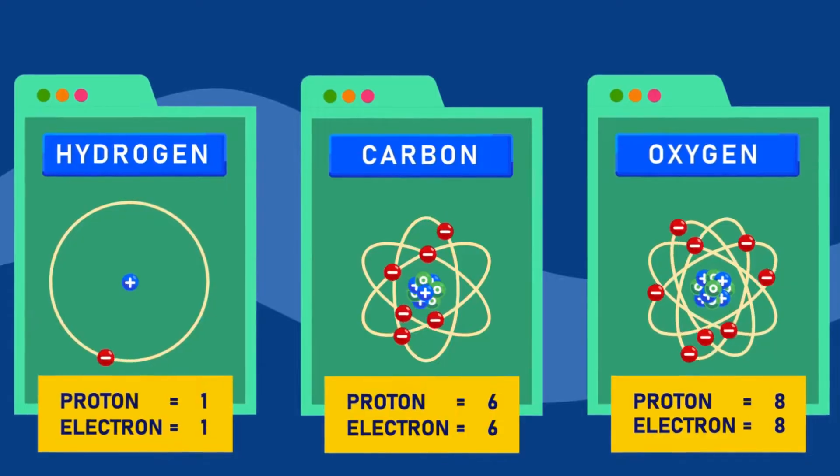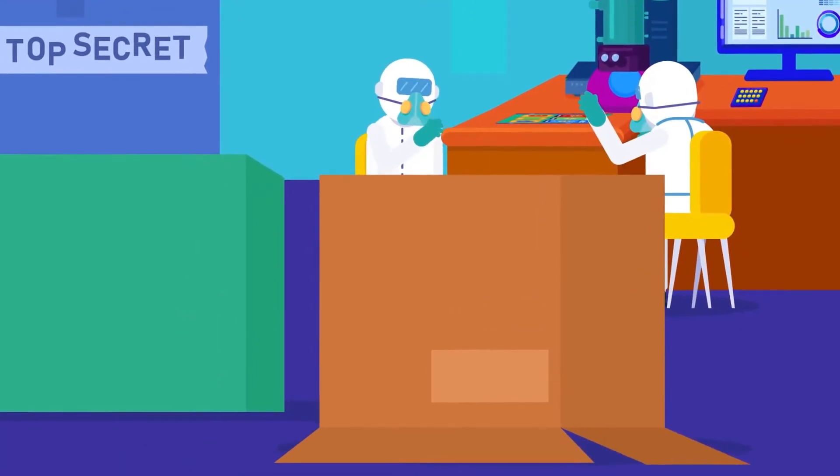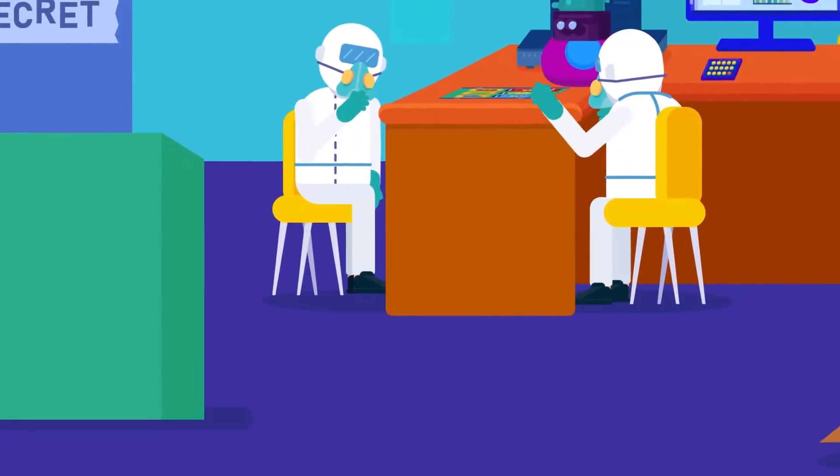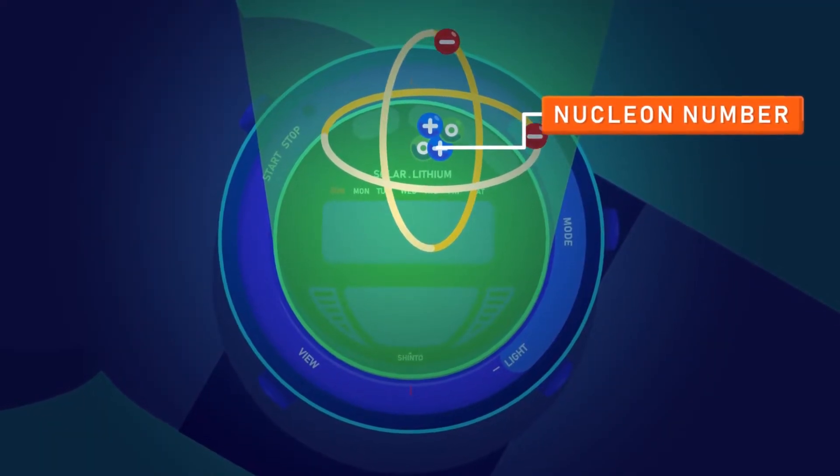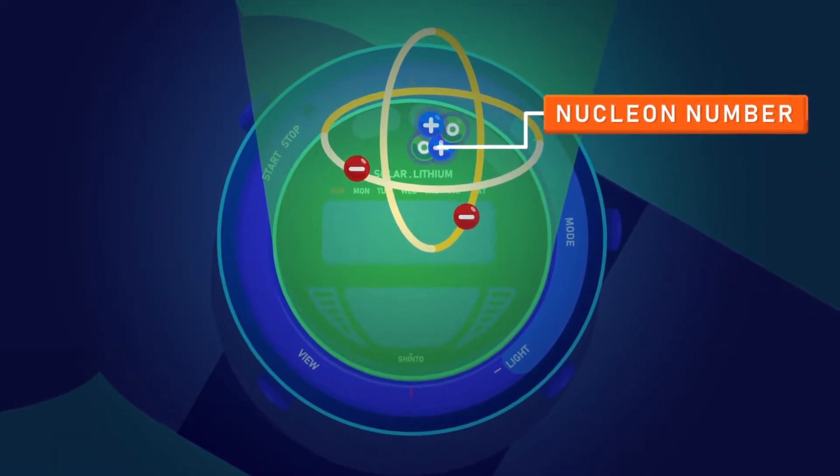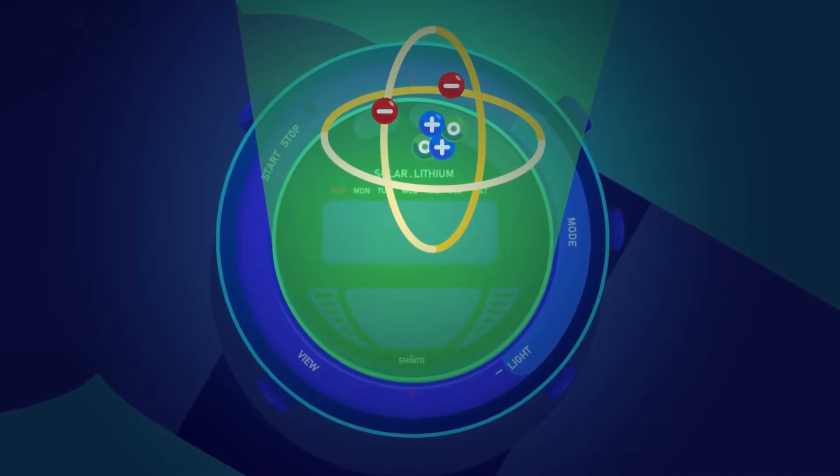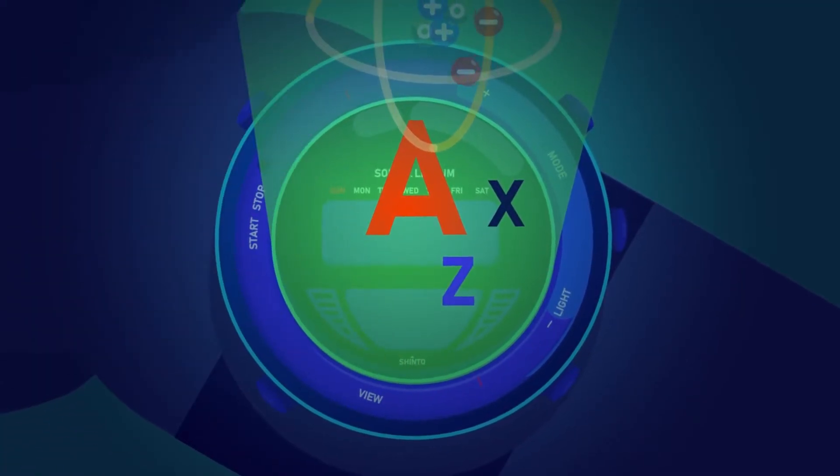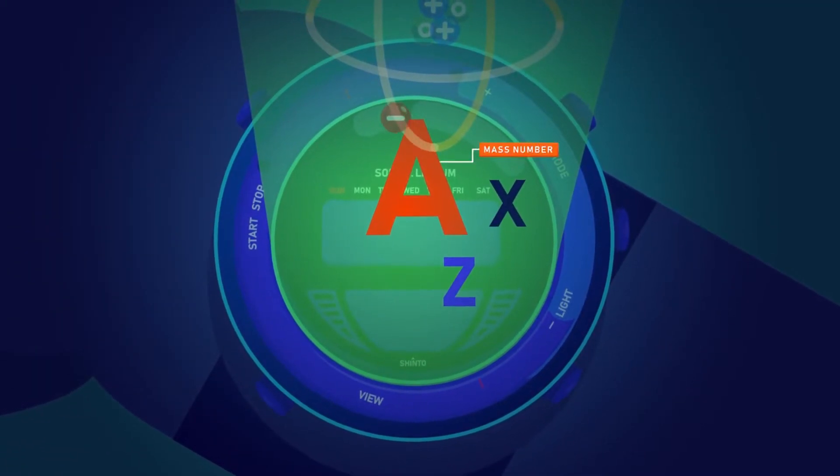Another important thing to remember is that each element has a unique proton number. Nucleon number. The nucleon number of an atom is the total number of protons and neutrons in the atom, and is represented by the symbol capital A. Nucleon number is also used to determine the mass number.